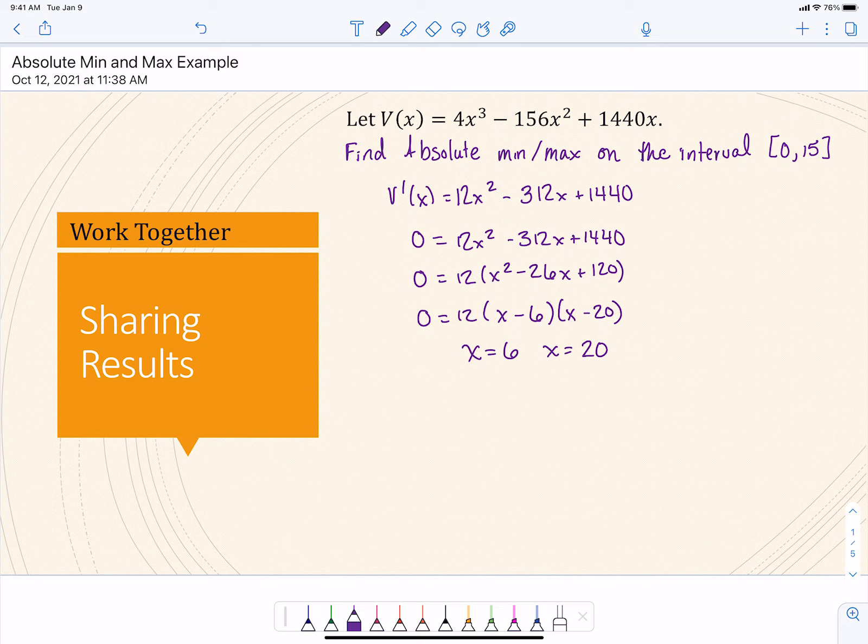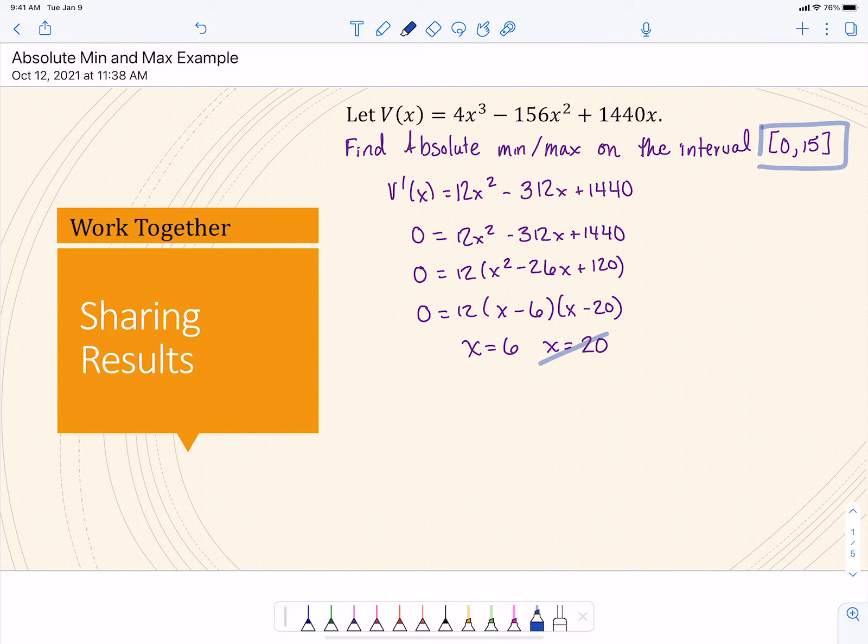Now there are two critical points, but we're not going to use this one, x = 20, because we're only looking at this function from 0 to 15. 20 is outside of our interval. So even though it might be a min or max, particularly local min or max, we don't care about that critical point for this question. We only care about 6 because that's in our interval.